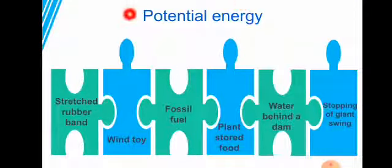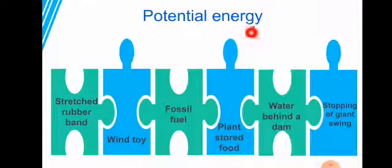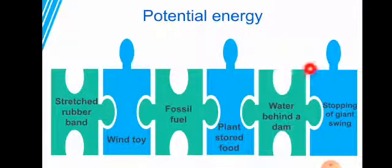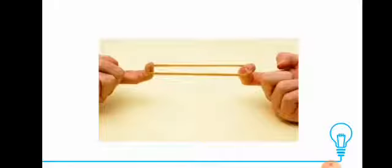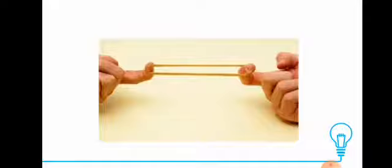Potential energy is stored energy. Here are six examples. First, look at this rubber band — when you stretch it, you give it energy, and that energy is stored in the rubber band. So the rubber band has potential energy.